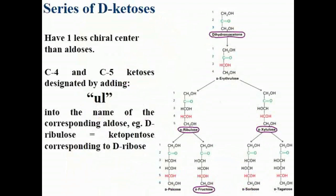For example, dihydroxyacetone has no chiral carbon, compared to its aldose counterpart glyceraldehyde which has one. Fructose has three chiral carbons while the corresponding aldohexose glucose has four. C4 and C5 ketoses are designated by adding '-ul-' to the name of the corresponding aldose — for example, D-ribulose is a ketopentose corresponding to the aldose ribose.